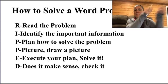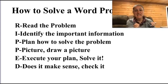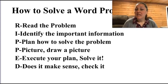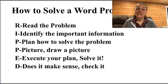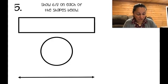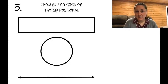We are going to use RIPPED to work through our word problem for the day. R — read the problem, I — identify the important information, P — make a plan, P — draw a picture, E — execute your plan and solve it, D — does it make sense? Take a look at today's problem: 'Show six-eighths on each of the shapes below.'